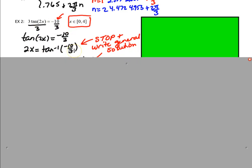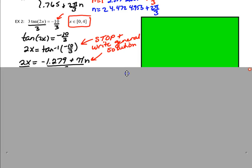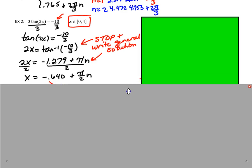I'm going to take the inverse tangent, and I'm going to stop and write the general solution, which for tangent is pretty simple. It's one line. I'm going to do inverse tangent of negative 10 thirds, which is negative 1.279 plus πn, because tangent repeats itself every π units, and so I only have to have one line. Once I've written the general solution, I divide by 2. Then I have x is equal to negative 0.640 plus π/2n.